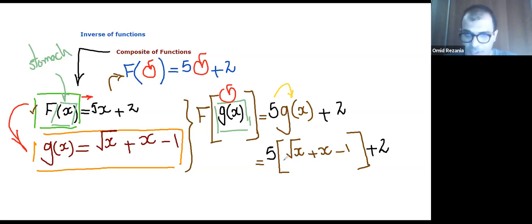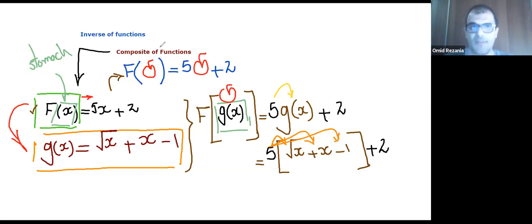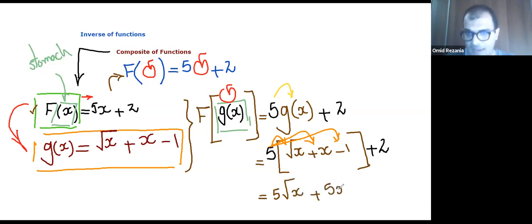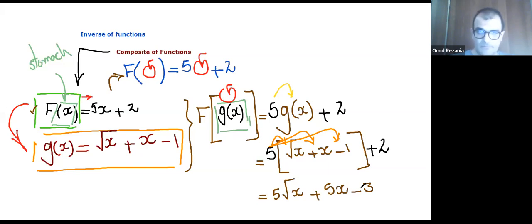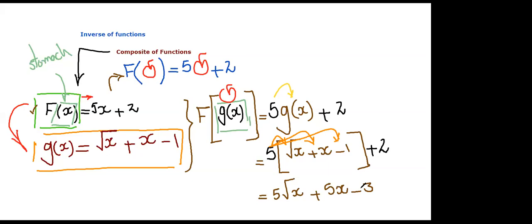You can take 5 inside the parentheses and simplify further. That means you can write it as 5 times the square root of x, plus 5x. You have 5 times minus 1 which becomes minus 5, then plus 2 at the end, so it becomes minus 5 plus 2, which is minus 3. Does it make sense, everyone? Yes, it's clear. Is everyone clear with what I did? Yes, it's clear. Awesome.